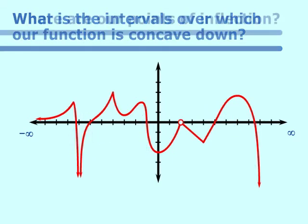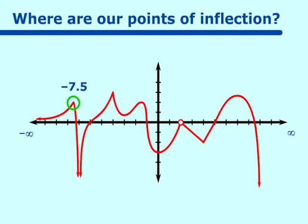Where are our points of inflection? We have a point of inflection at negative 7.5, changing from concave up to concave down. At negative 5, there is a point of inflection changing from concave down to concave up. At negative 2, it changes from concave up to concave down. At negative 1, it changes from concave down to concave up. There is also a change in concavity on the last piece of the function. This concludes our lesson on function attributes.